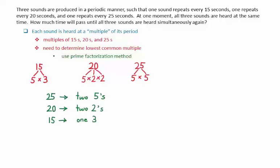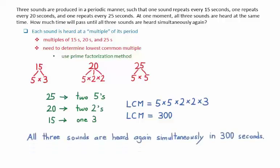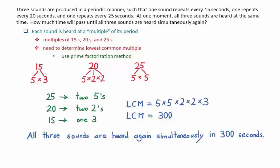We have to multiply all of these together to get the lowest common multiple. The LCM, then, equals 5 times 5 times 2 times 2 times 3. This gives a result of 300 for the lowest common multiple. We can then say that all three sounds are heard again simultaneously in 300 seconds.